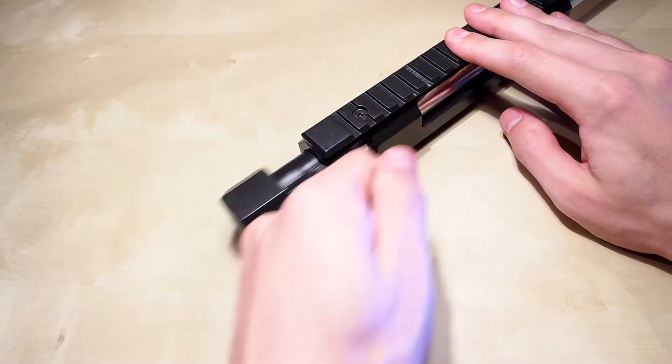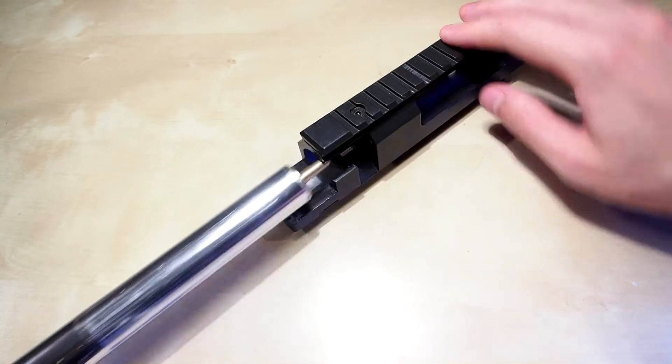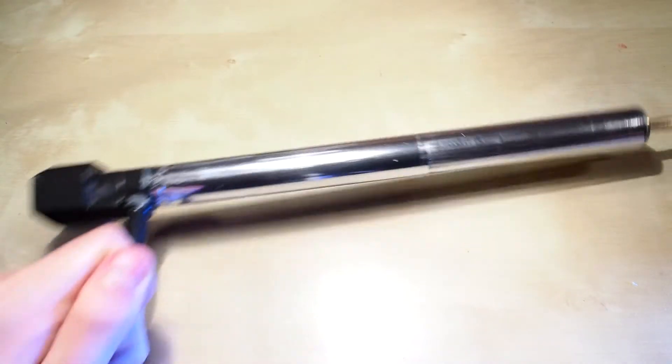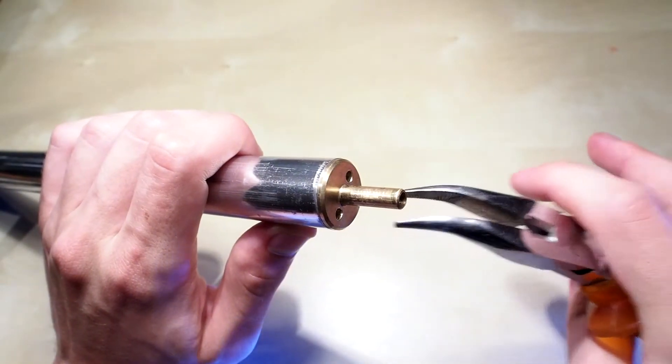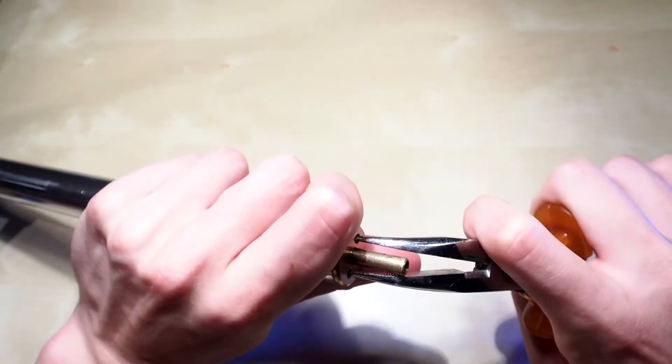When you have removed the trigger box, you can pull out the bolt assembly. Remove the cylinder head with some needle nose pliers, take out the stock controls and put them to the side.